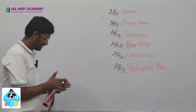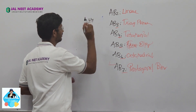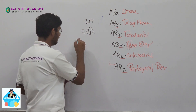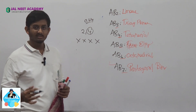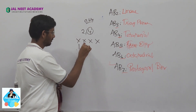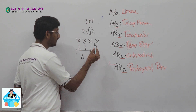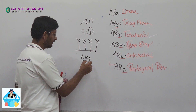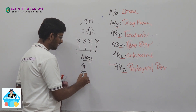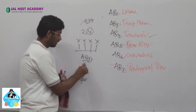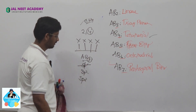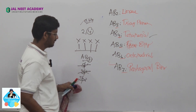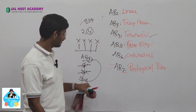Next, methane: CH₄. The central atom is carbon. Carbon has 4 valence electrons. We have four hydrogens — hydrogen can make single bonds — so this is AB4, which is tetrahedral. So what is the shape and geometry of methane? Tetrahedral. The hybridization is sp³, because one plus three equals four.